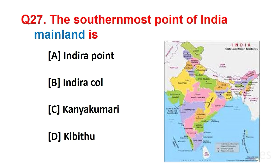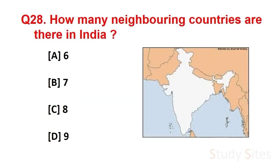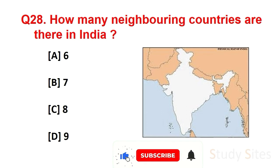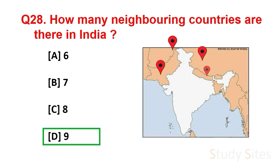Question number 27. The southernmost point of India's mainland is Kanyakumari. Question number 28. How many neighboring countries are there of India? Answer is 9. They are Pakistan, Afghanistan, China, Nepal, Bhutan, Bangladesh, Myanmar, Sri Lanka and Maldives.